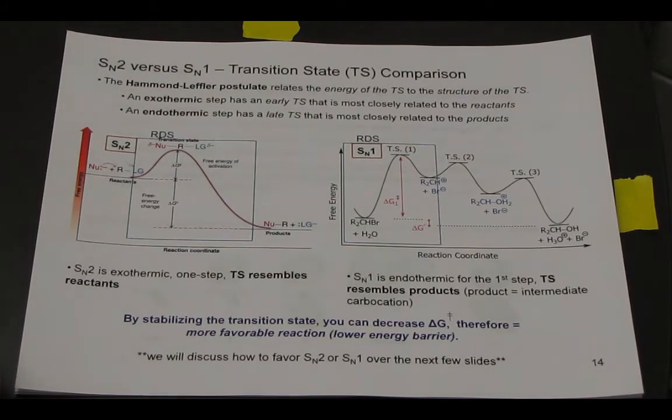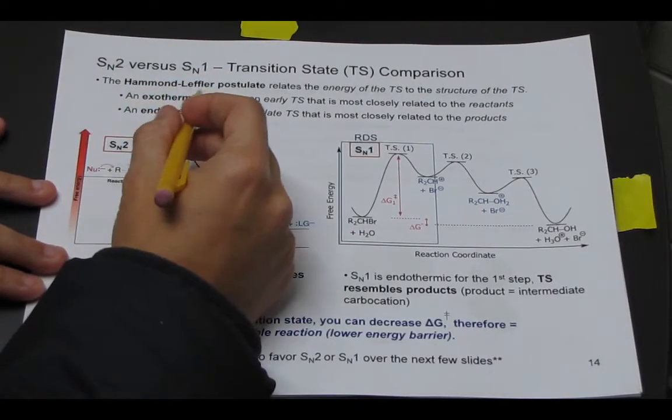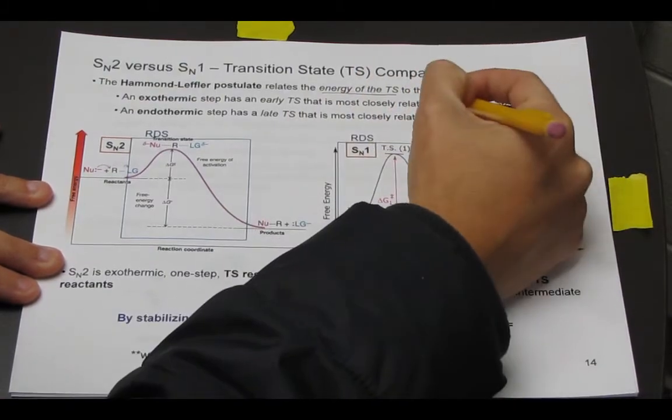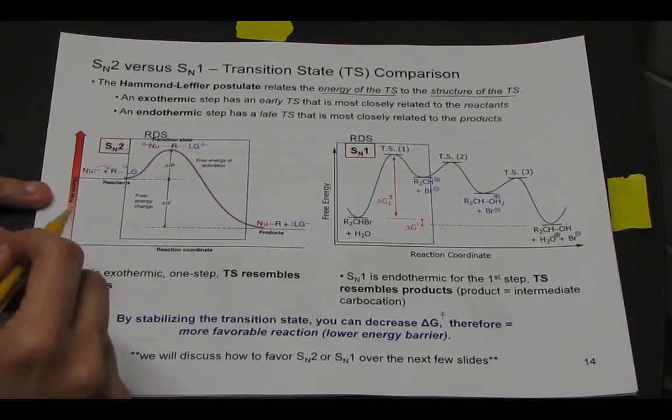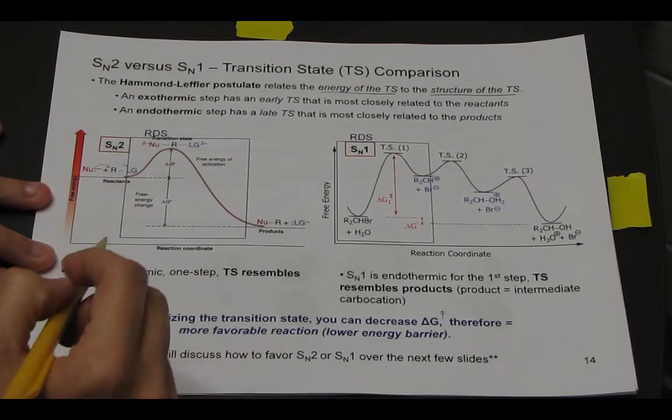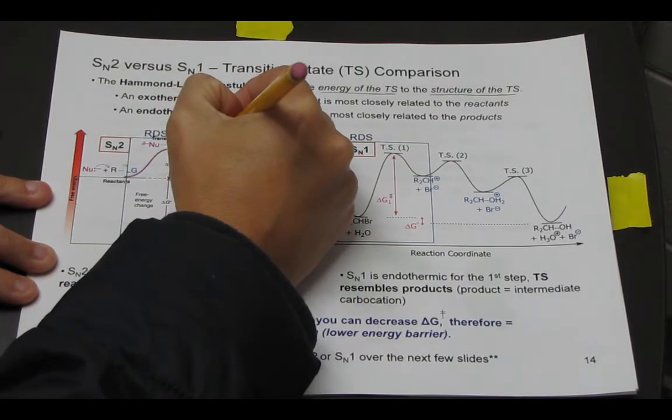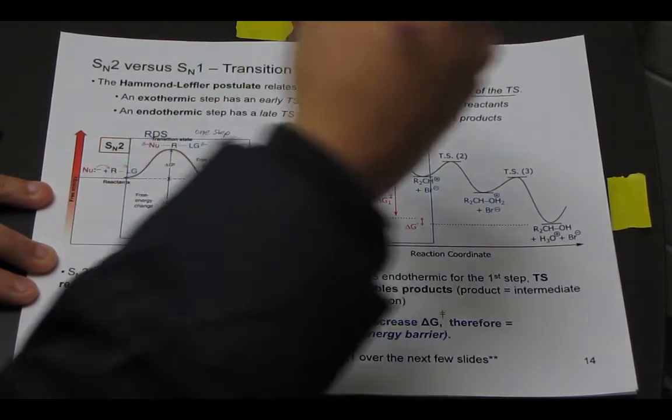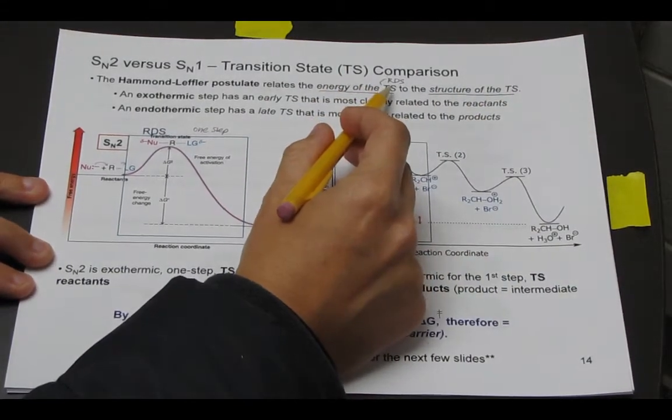Before we get to that point, let me just compare the two transition states and energy diagrams because this brings up one last point, and that's known as the Hammond-Leffler Postulate, and it relates the energy of the transition state, so just TS, to the structure of the transition state. And remember, the transition state is our highest energy point in the reaction, so the top of the energy diagram. When we talk about the energy of the transition state, what we mean specifically is of the rate-determining step.